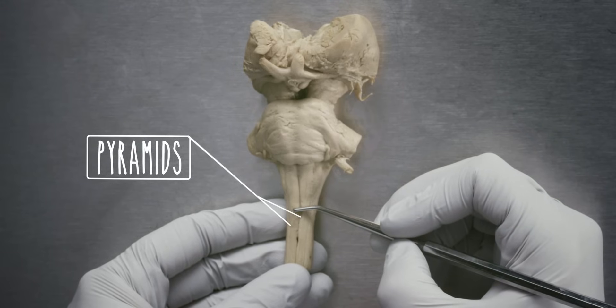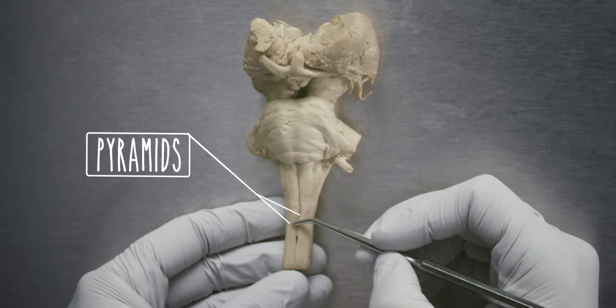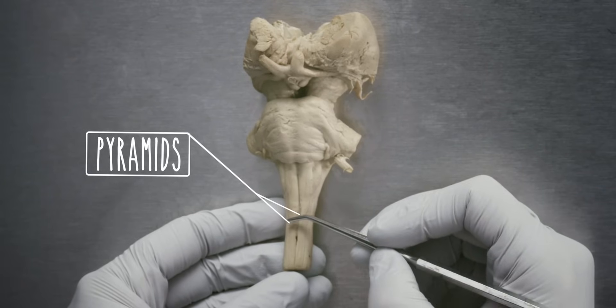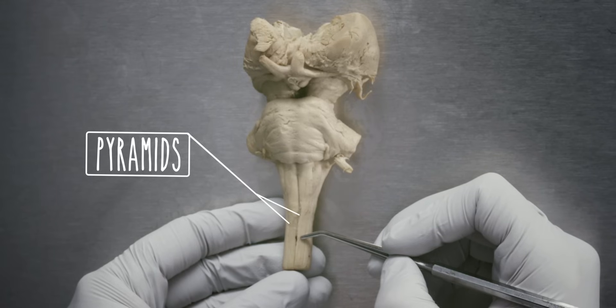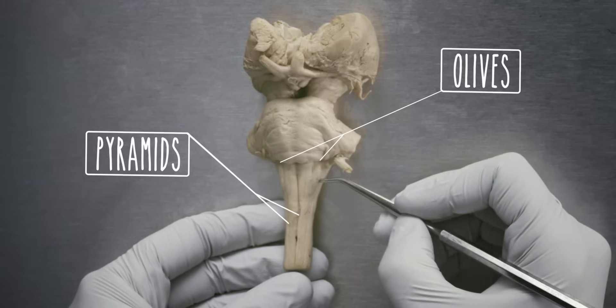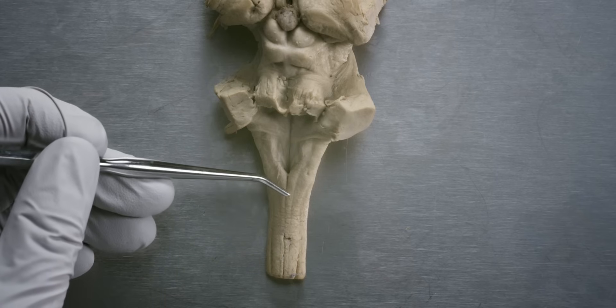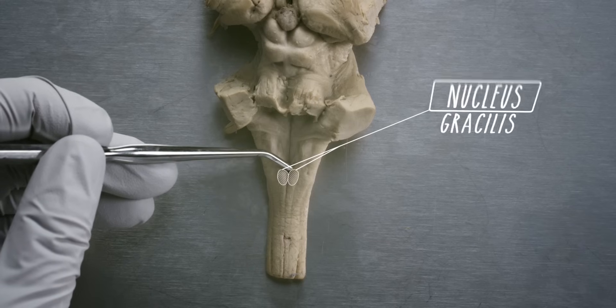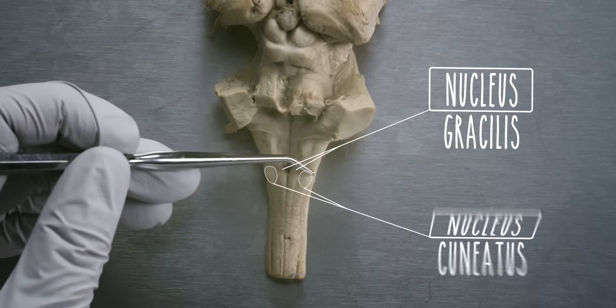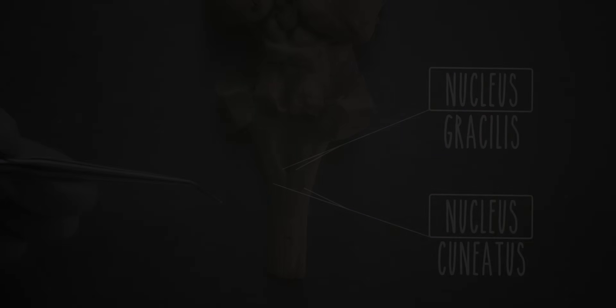On the anterior surface of the brainstem are the pyramids, which contain the descending motor fibers. Here in the caudal medulla the fibers cross over to the contralateral or opposite side — this is the pyramidal decussation. Lateral to the pyramids lie the olives; the inferior olivary nuclear complex lies underneath and is an important nucleus for the cerebellar circuitry. On the posterior surface of the brainstem, the posterior columns ascend with sensory information from the spinal cord, where the nucleus gracilis lies medially and the nucleus cuneatus lies laterally.